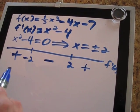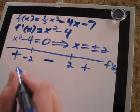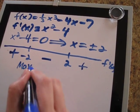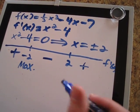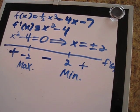So now here, at negative 2, f prime of x switches from positive to negative. So we will have a local max. And here, it switches from negative to positive. So at 2, we will have a minimum.